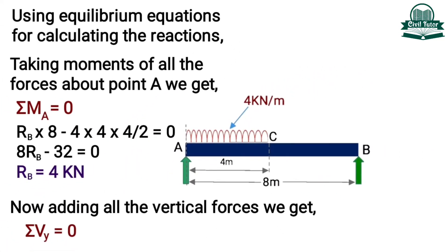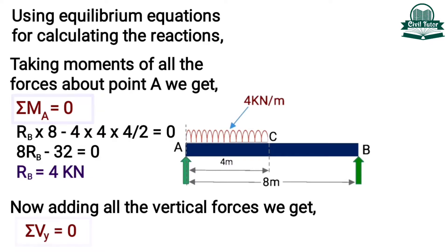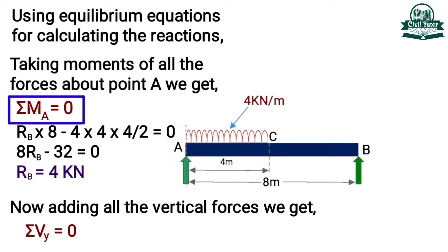For finding the support reactions we will be using the basic equilibrium equations. Now let's take the moments of all the forces acting on the beam about point A and equate the resultant moment of all the forces about A to 0, which will be our equilibrium equation based on moments.